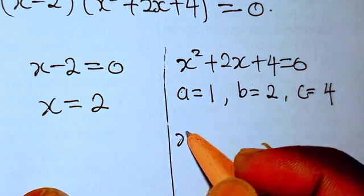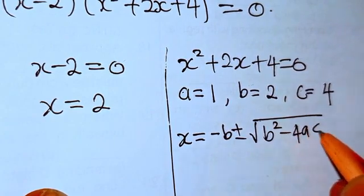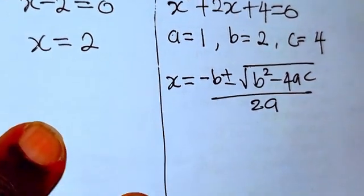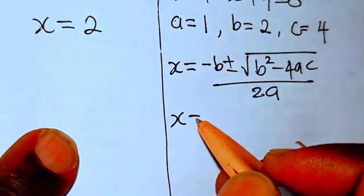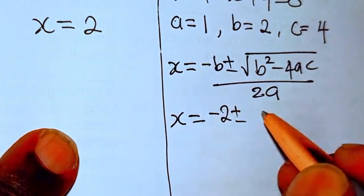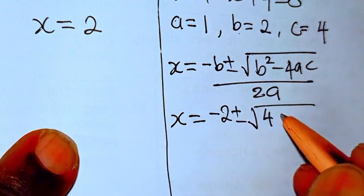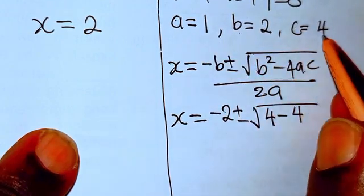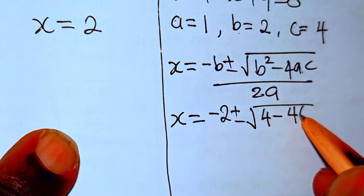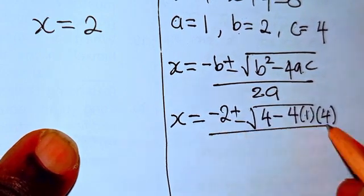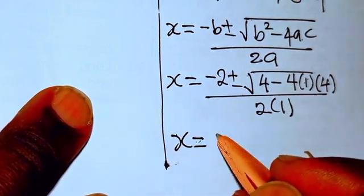The quadratic formula gives x equals minus b plus or minus the square root of b squared minus 4ac, all over 2a. Plugging in the values: x equals minus 2 plus or minus the square root of 2 squared minus 4 times 1 times 4, over 2 times 1.